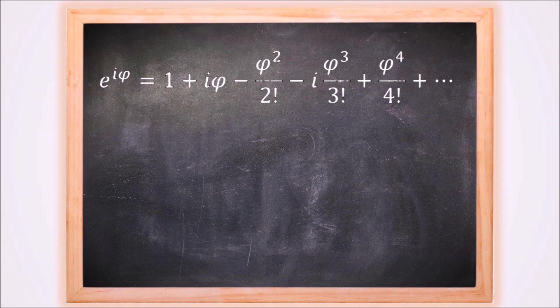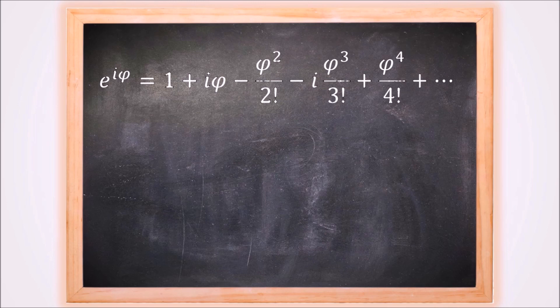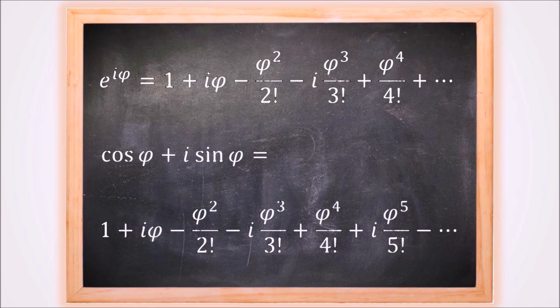And here is the cool part. Making use of the rule that i squared equals minus 1, this polynomial is exactly the same as the power series of cosine of phi plus i times the power series of sine of phi.